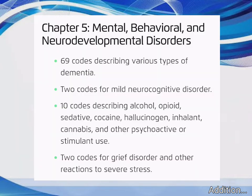Chapter 5 – Mental, Behavioral, and Neurodevelopmental Disorders: 69 codes describing various types of Dementia, 2 codes for Mild Neurocognitive Disorder, 10 codes describing Alcohol, Opioid, Sedative, Cocaine, Hallucinogen, Inhalant, Cannabis, and Other Psychoactive or Stimulant Use, and 2 codes for Grief Disorder and Other Reactions to Severe Stress.